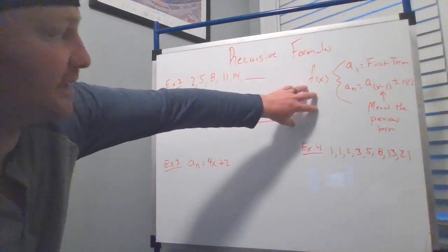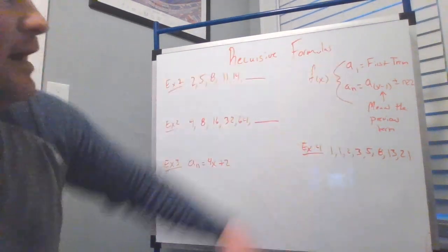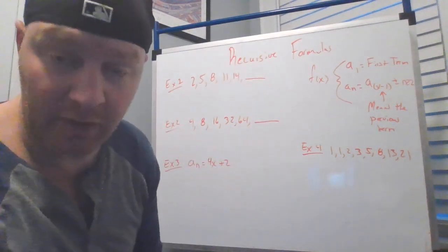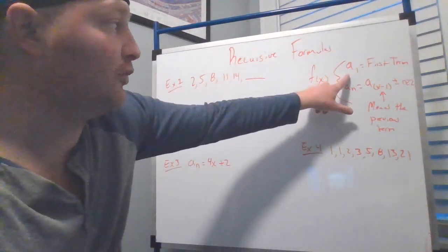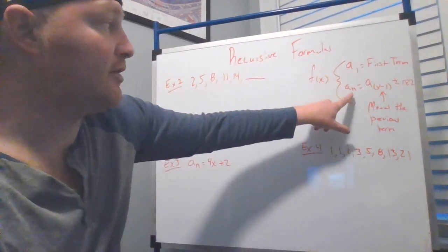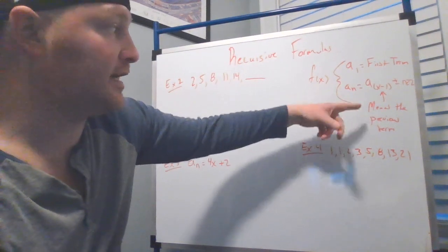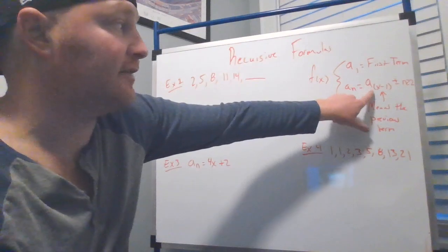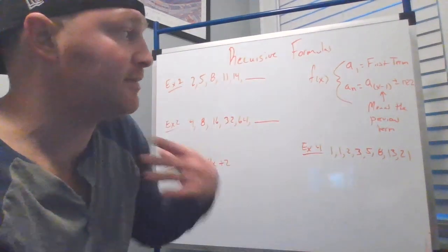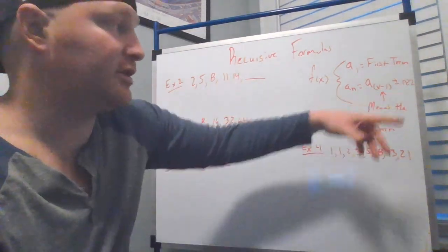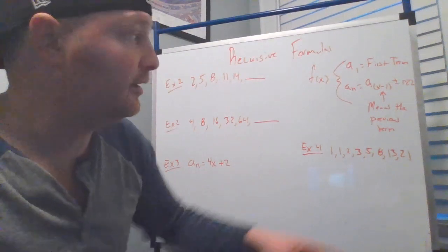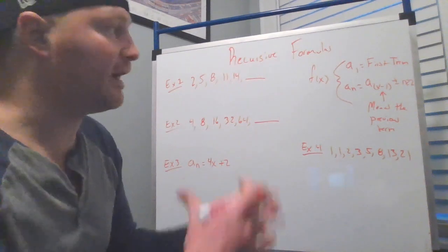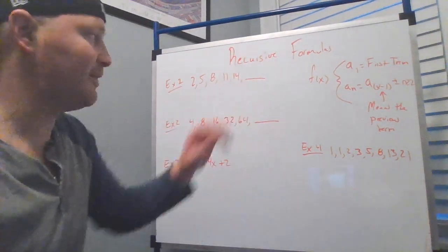So this is the basic structure of how a recursive formula looks. You always call your first term, no longer call it the zero term, you call it the first term. And that's called a sub 1 is equal to the first term. And then you have a sub n is equal to, which is the next term, is take the previous term. That's what a sub n minus 1 represents. It means really the previous term. Plus or minus or multiplied by whatever. Always greater than and equal. It's always after the second term. So here's what I mean.